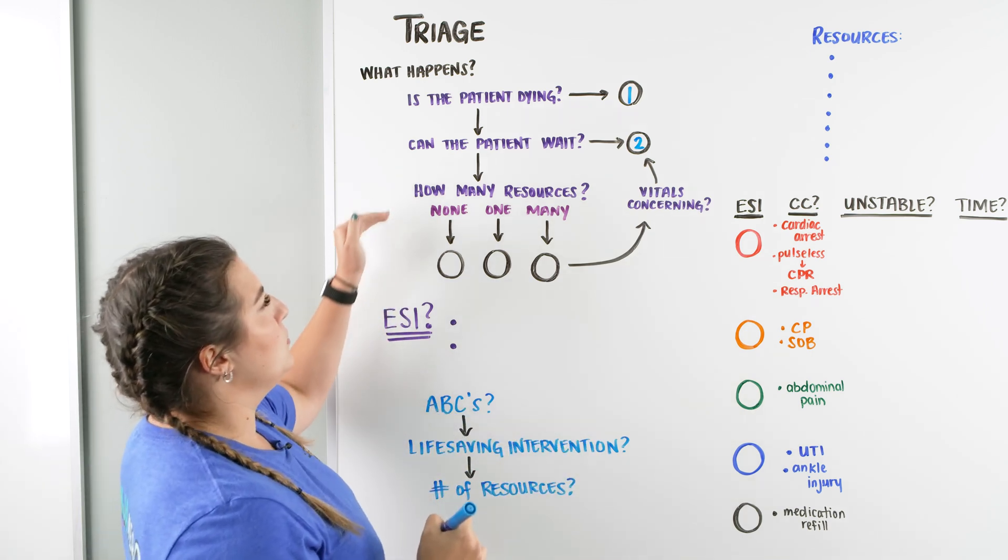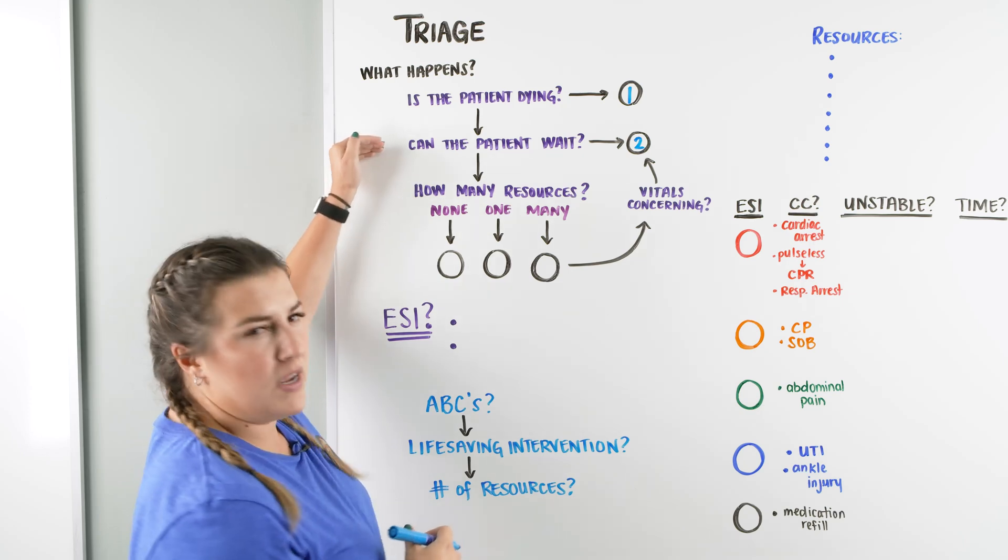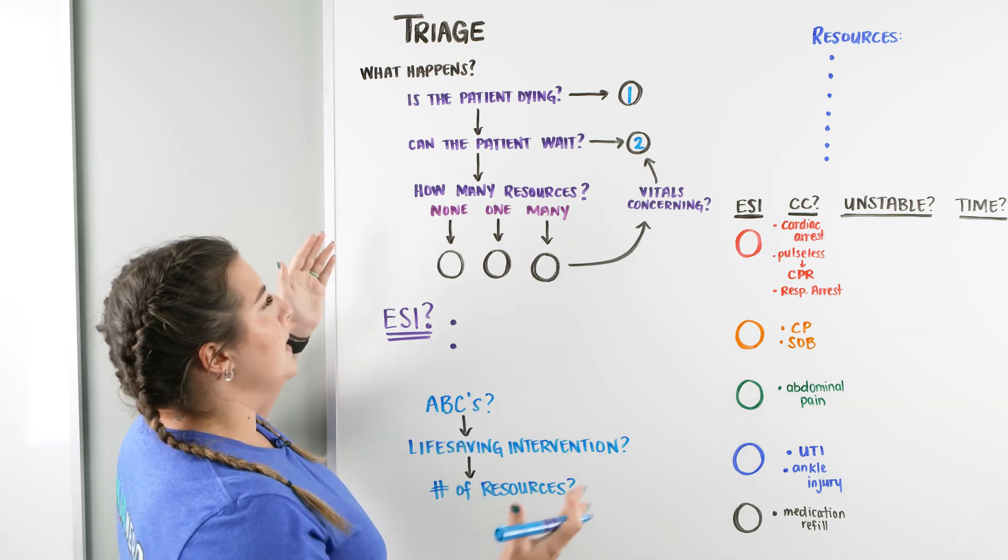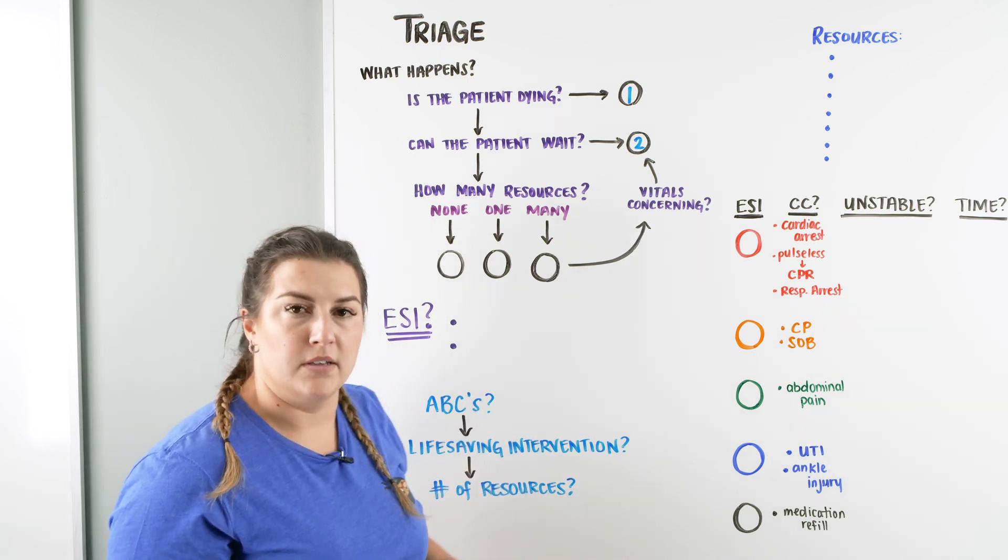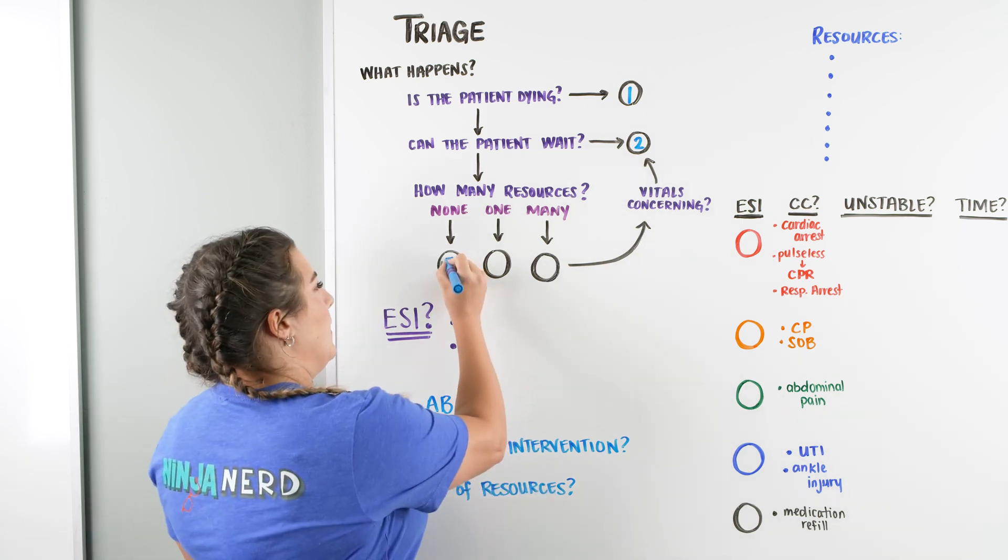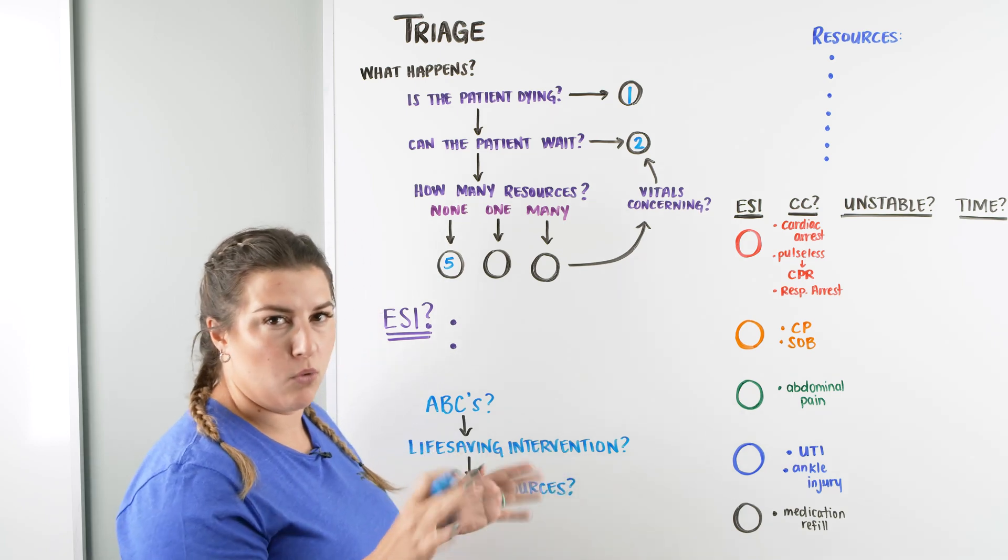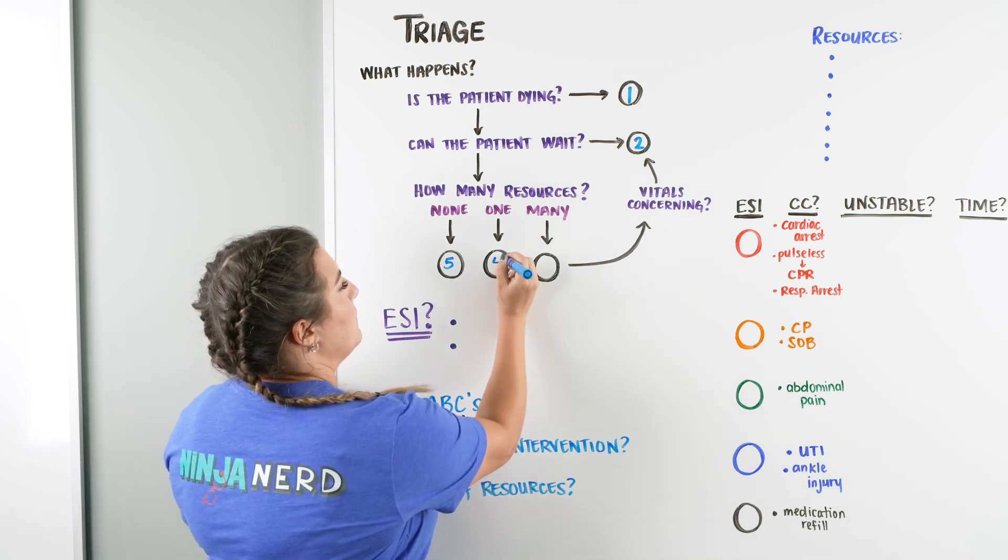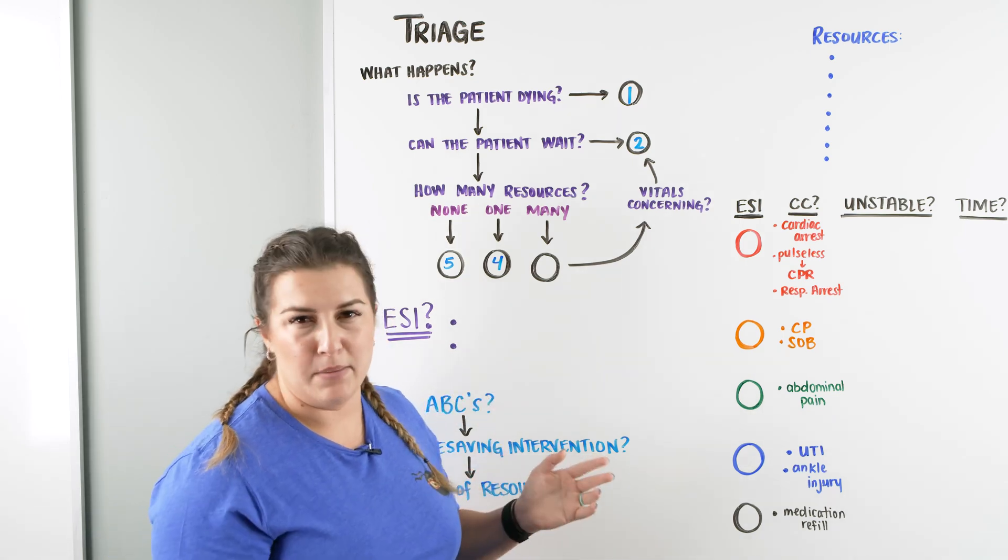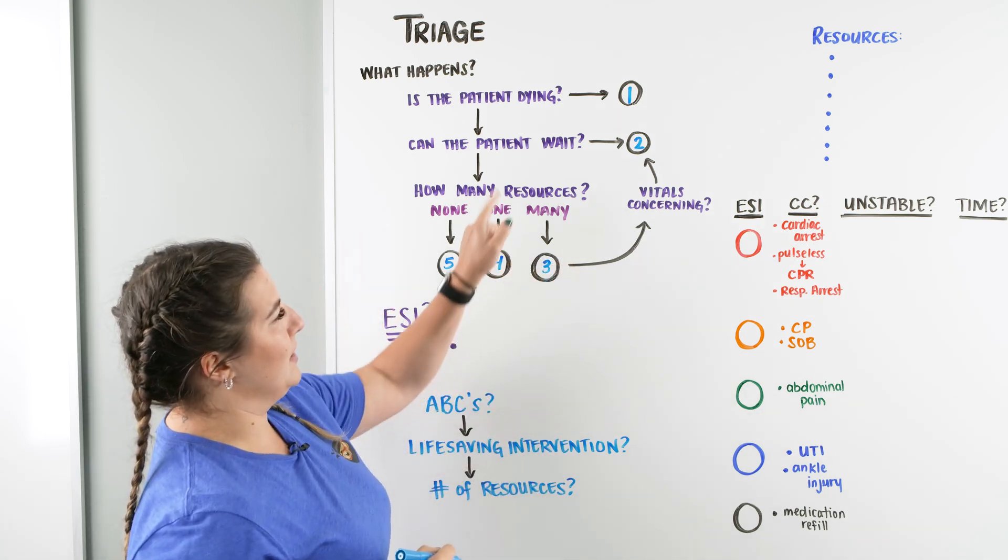And then we're going to go on to a third question. So if they pass is the patient dying? No. Can the patient wait? Yeah, they could probably wait. We're going to go into how many resources are they going to need. And if they need basically no resources from us, so somebody who might need like a medication refill, then they're going to be a five. If they need maybe one resource, like they might need some type of medication that is not oral, we would put them as a four. Or there's somebody that's going to need something like IV fluids and maybe an image to see what's going on, they're going to be a three. But if you get to somebody who's like, they're a three, they're going to need a lot of resources from us, but they also have some concerning vital signs, I'm going to bump them up to a two so they can get back.